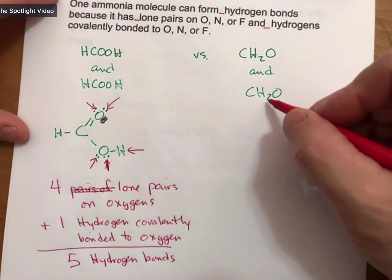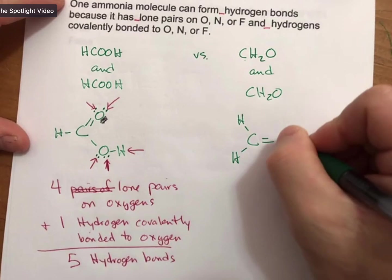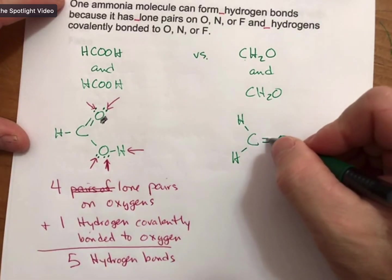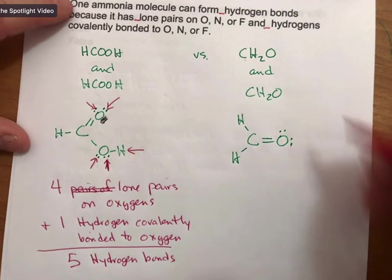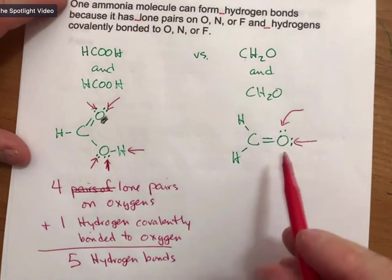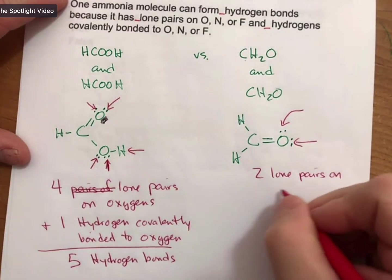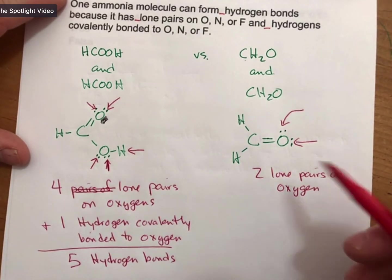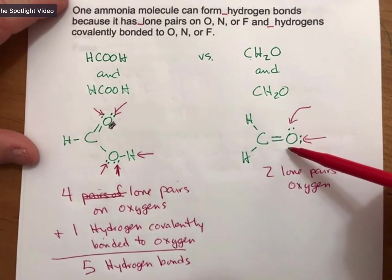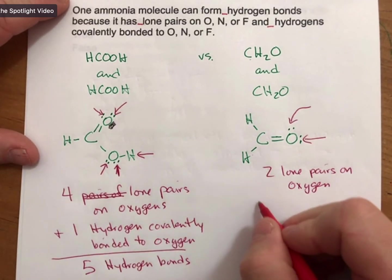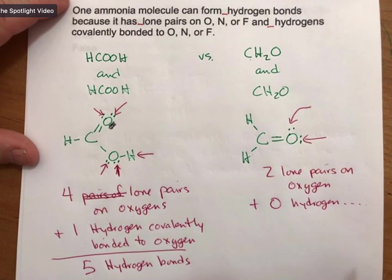Now, this molecule here has the Lewis structure CH2O with a double bond to the oxygen. The only two hydrogen bonds that can form here are to the two lone pairs on oxygen. And there are zero hydrogens bonded to either oxygen, nitrogen, or fluorine.